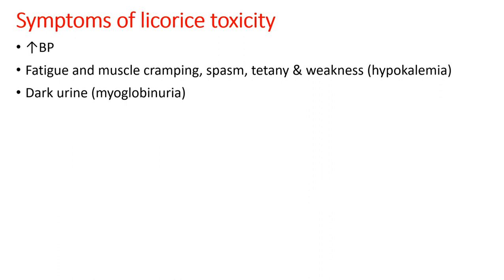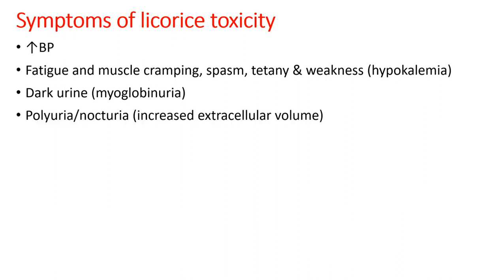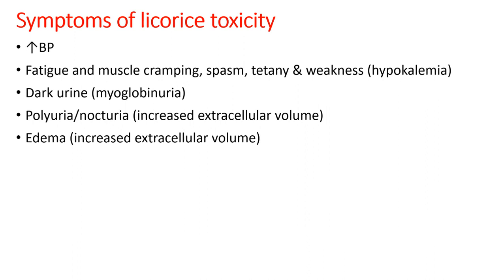Weakness is particularly observed due to hypokalemia — reduced potassium in the blood. When potassium decreases, myoglobin is eliminated in the urine; myoglobin has a blackish coloration and is water soluble, so the urine appears darker in color. Excessive fluid retention can cause polyuria, frequent urination, or nocturia — urination at night.